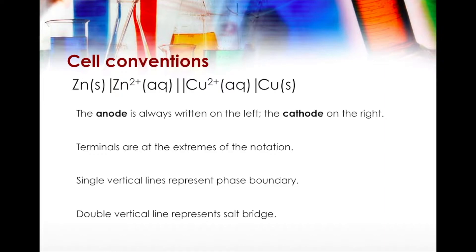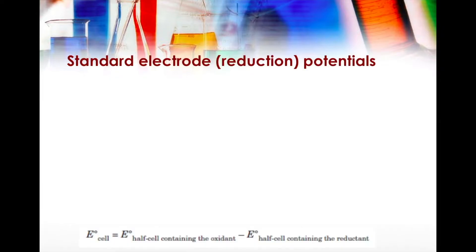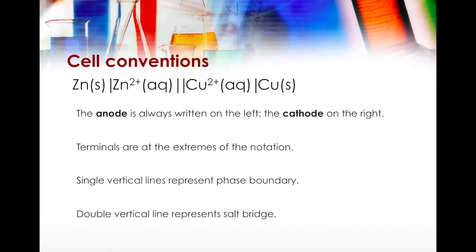Take note that anode on the left and cathode on the right is only used for cell conventions. It is not a requirement to draw an electrochemical cell with the anode on the left or cathode on the right specifically. You can put the anode on the left or the right when drawing or constructing the cell. Only when expressing it in the form of cell convention must you follow anode on the left and cathode on the right. If you're unsure, watch the first video again where I've shown how to construct a cell using cell convention.